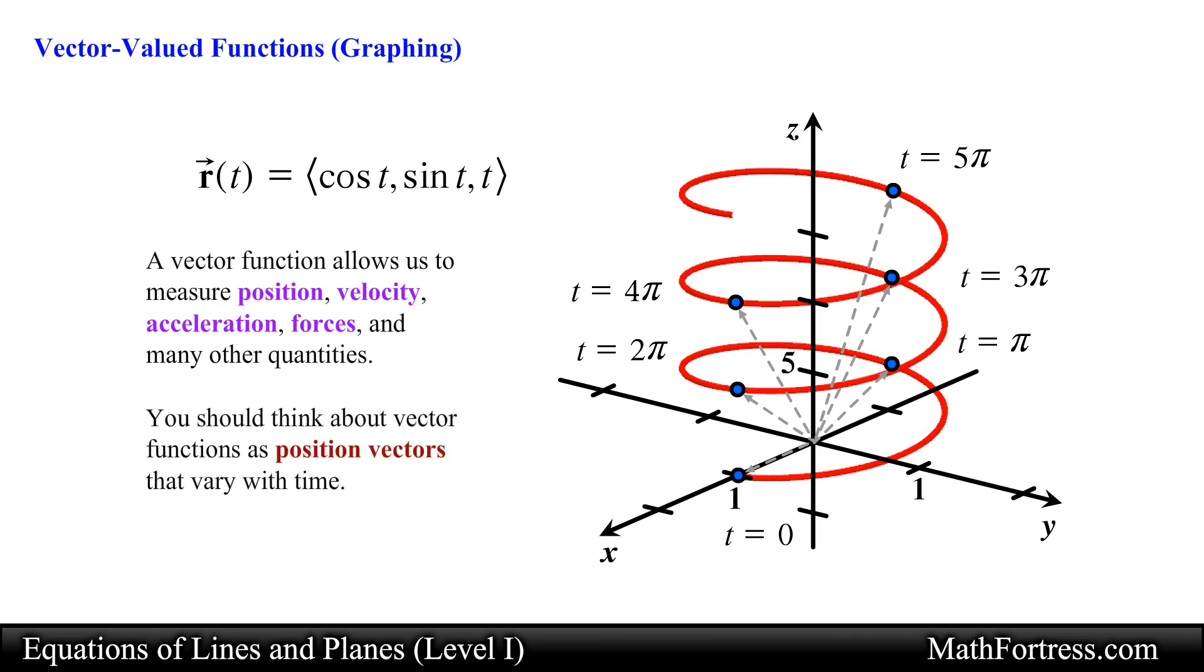For the purpose of this video series, you should think about vector functions as position vectors that vary with time. These position vectors trace the movement of the curve as time increases. We typically draw arrows on the curve to show the direction that the end points of the position vectors move along as t increases.